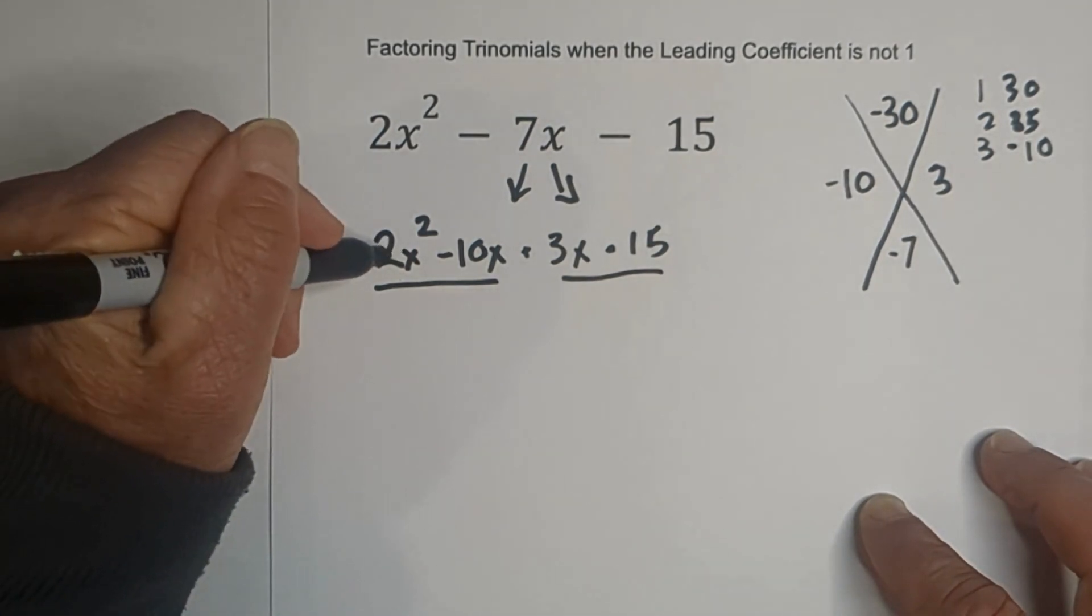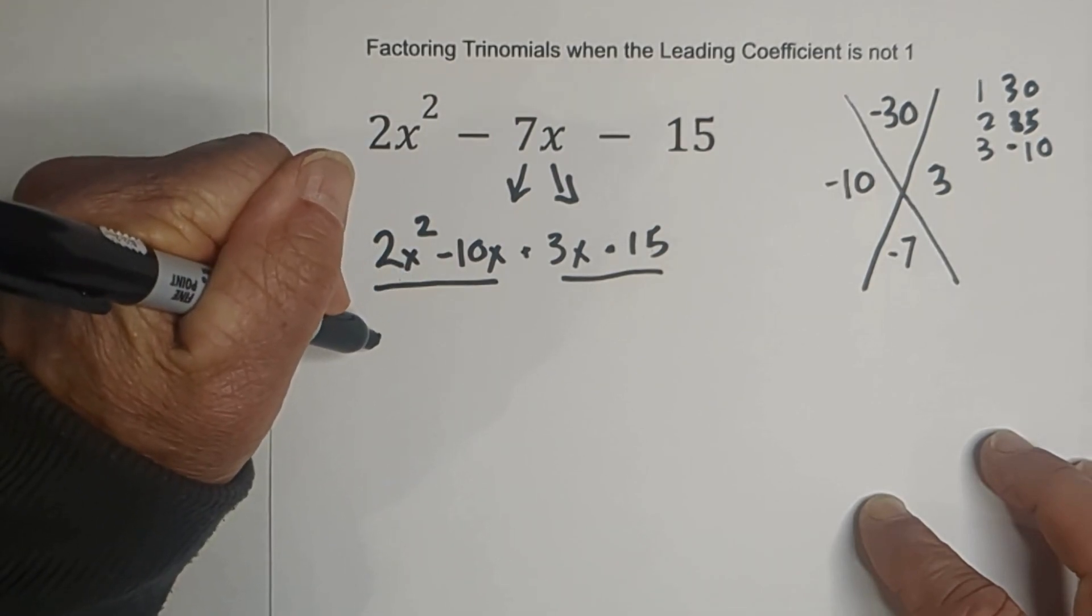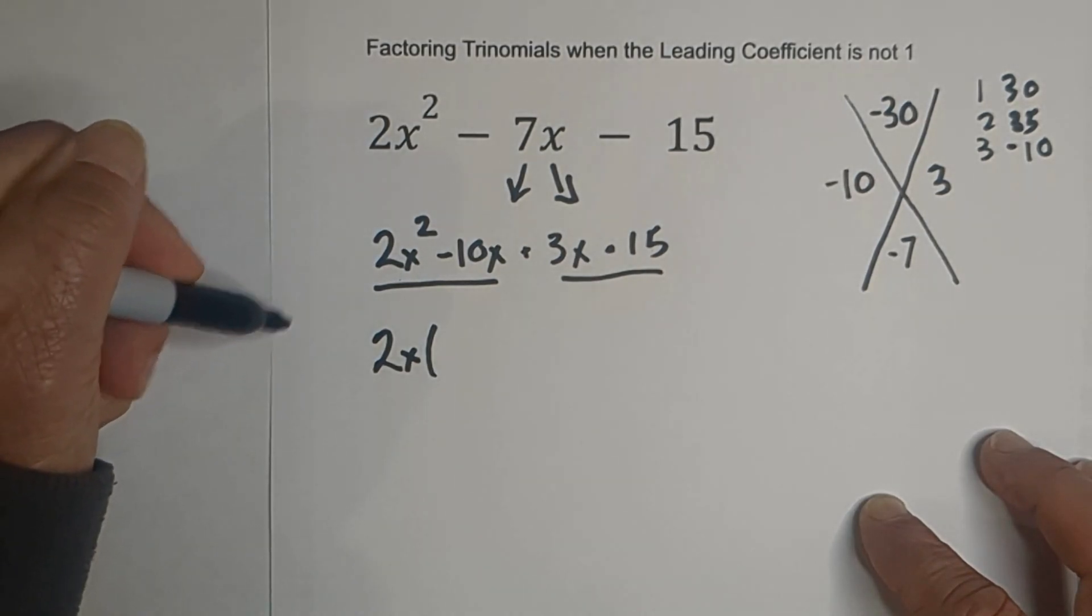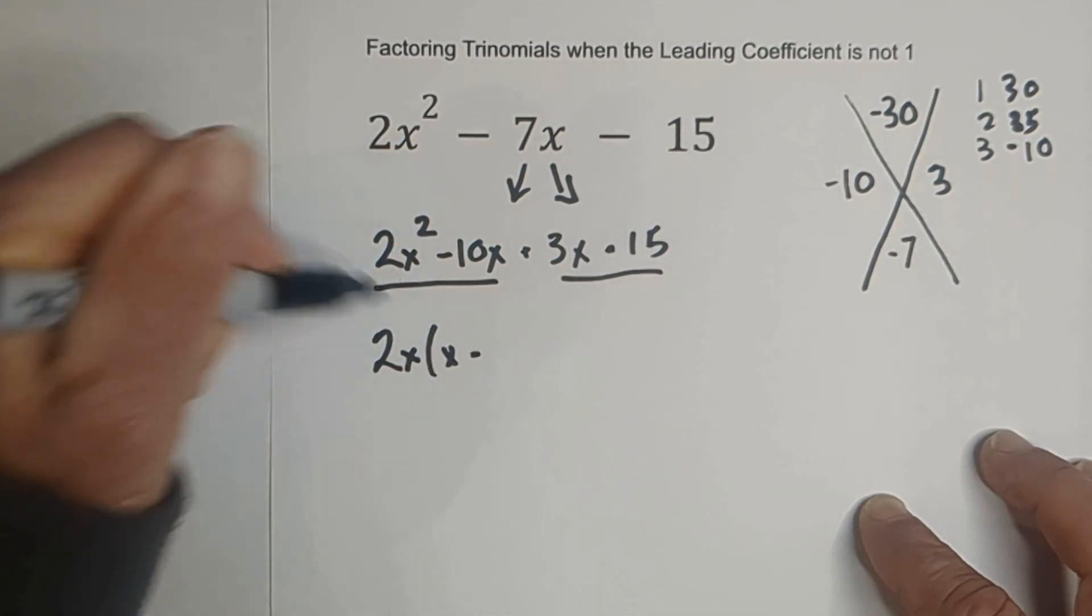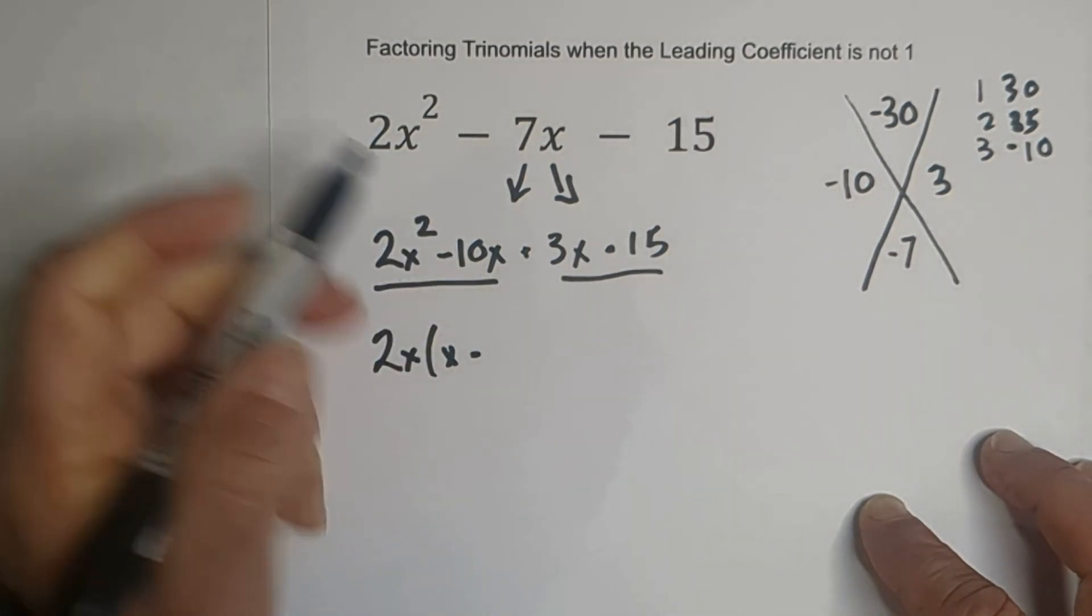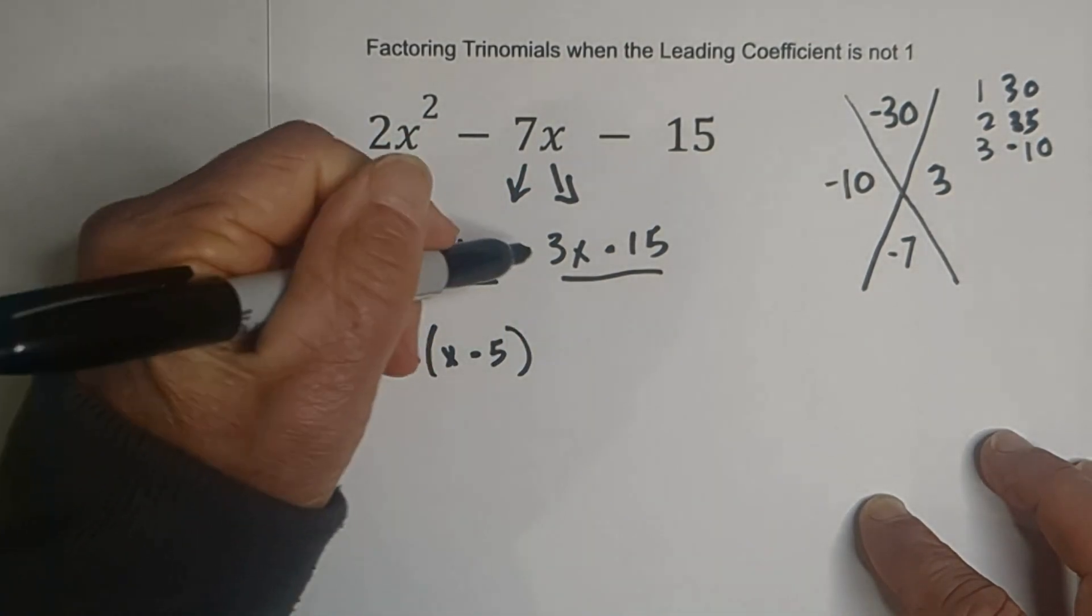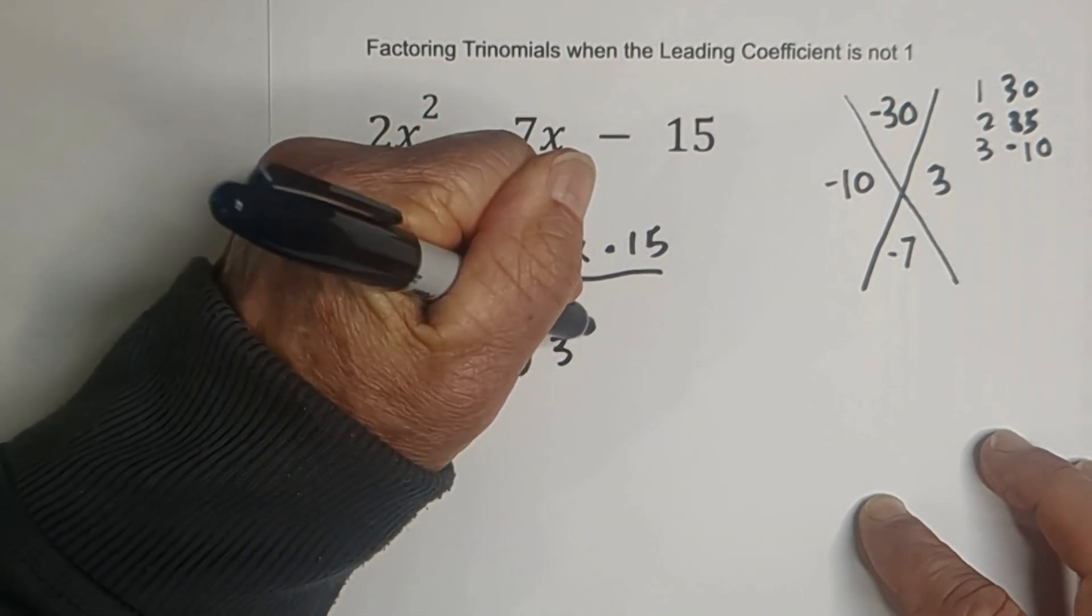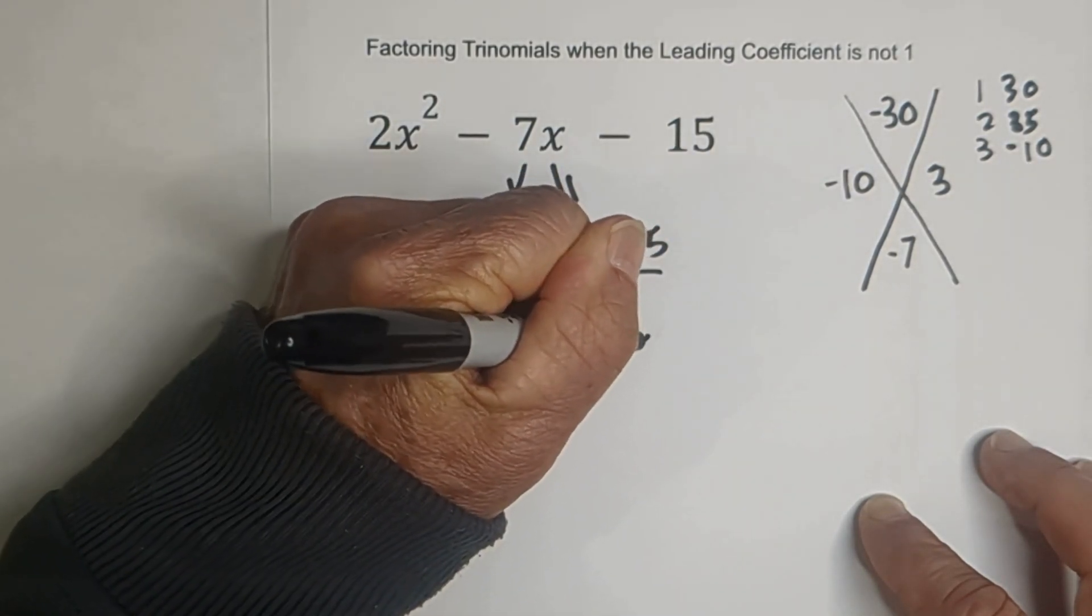And so what we're going to do is we're going to factor. So we're going to factor out this one, we can factor out 2x times, we have x minus 5 and 2x goes into 10x five times. And then on the other side, we can factor out a 3. And 3 when we factor this out will be x minus 5.